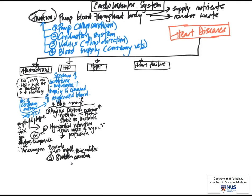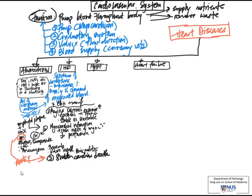The next clinical entity within the spectrum of ischemic heart disease is sudden cardiac death, which is usually secondary to arrhythmia — specifically ventricular fibrillation. Ventricular fibrillation can occur not only during myocardial infarction, but also in the absence of infarction, whenever there is acute plaque change or severe significant stenosis in the coronary arteries. The last of the four entities is chronic ischemic heart disease, characterized by slow progressive loss of myofibers in the heart muscle, leading to heart failure.